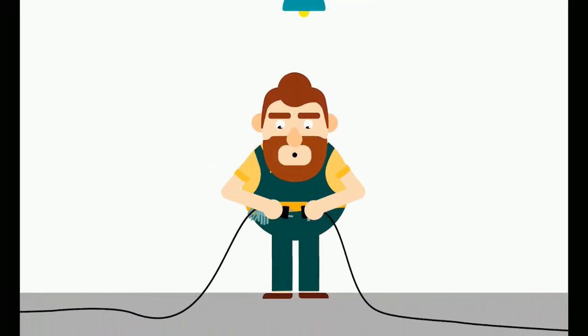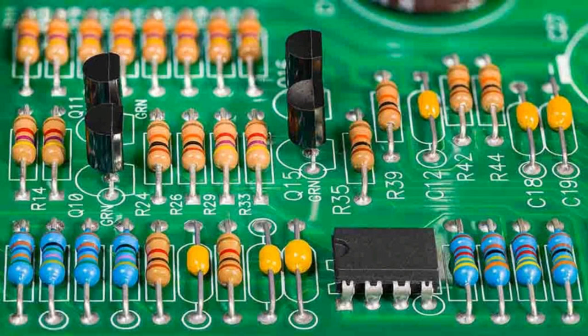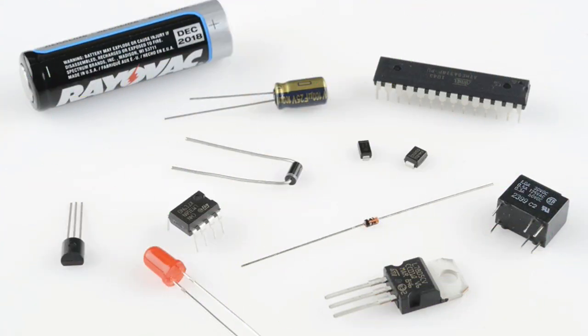Five: Controlling the current. Active components, as the name implies, can easily control the flow of the current. The same task cannot be done by a passive component.